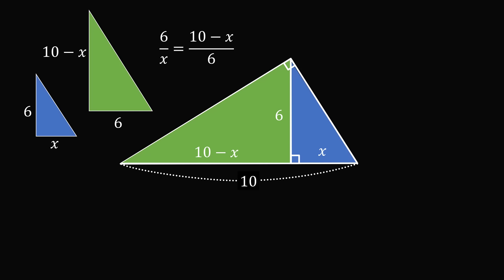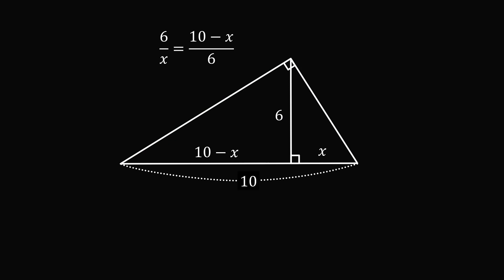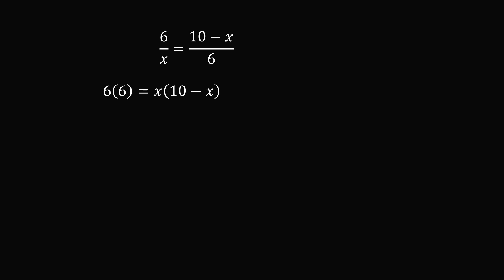All that remains is to solve for x. That will give us some answer of what x needs to be. So let's go ahead and solve this equation. Let's cross multiply. So we have 6 times 6 is equal to x times the quantity 10 minus x. This means 36 is equal to 10x minus x squared.